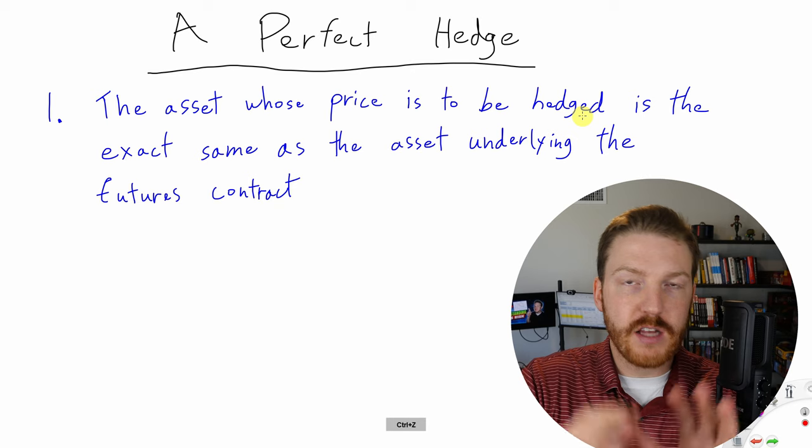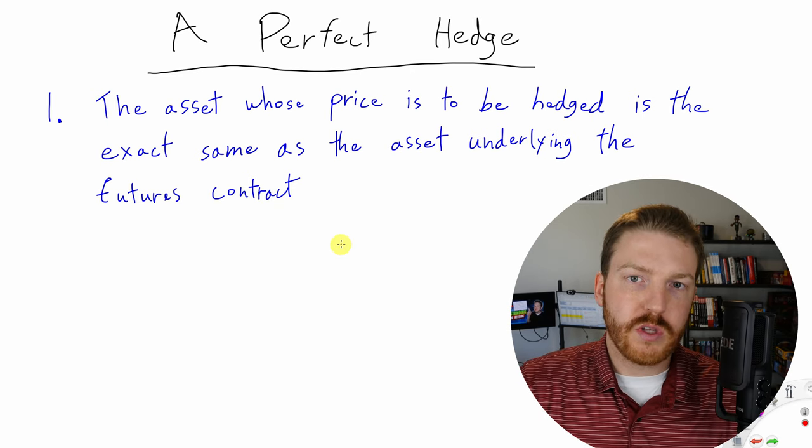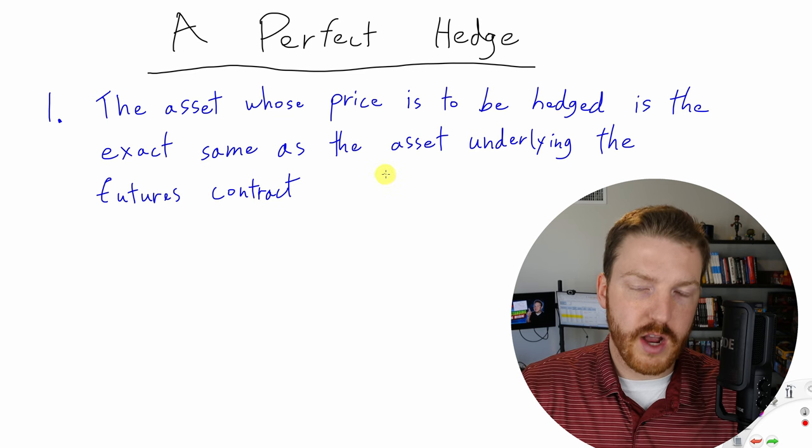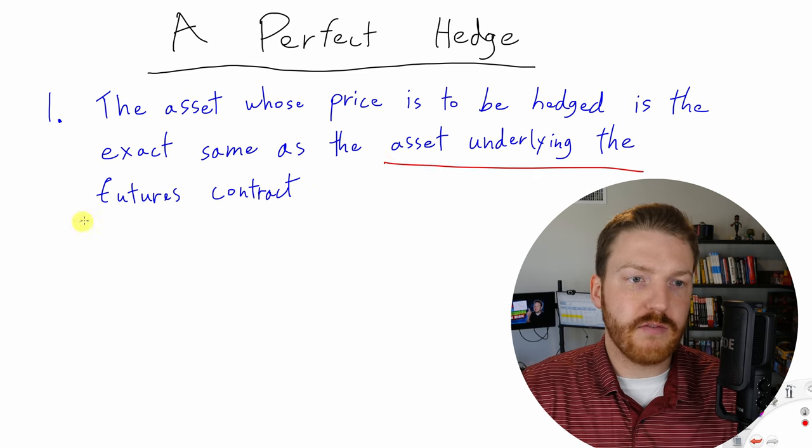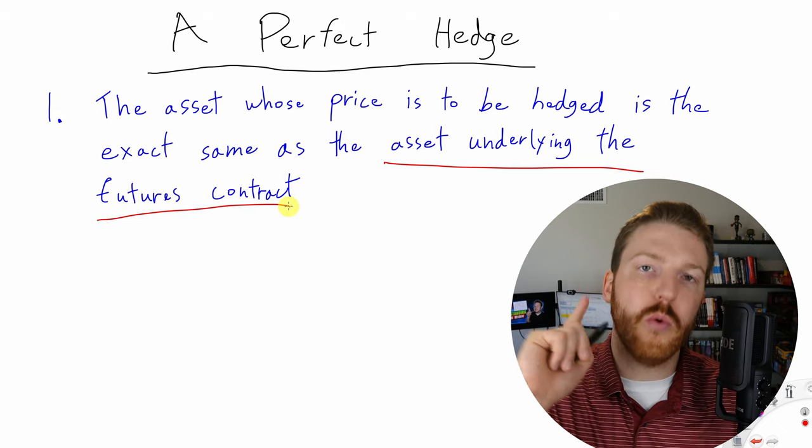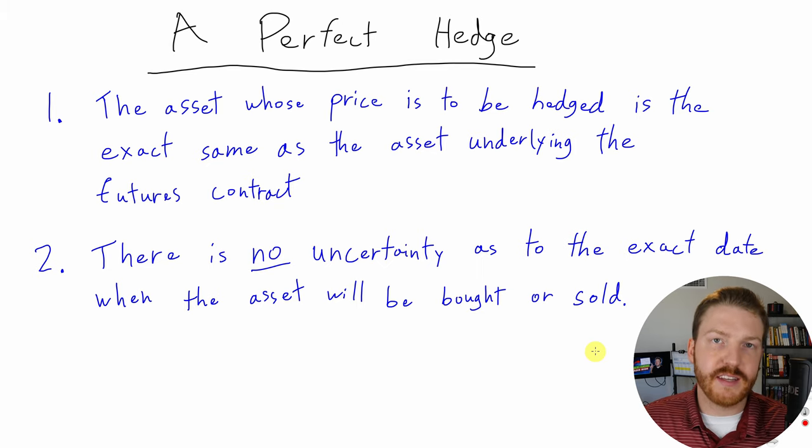And then if the hedge criteria, the perfect hedge criteria was satisfied, we'd say that there is a futures contract out there where the asset underlying that futures contract is also one ounce of gold. That would satisfy this condition. The second condition that must be satisfied for a perfect hedge to exist is that there is no uncertainty as to the exact date when the asset will be bought or sold.